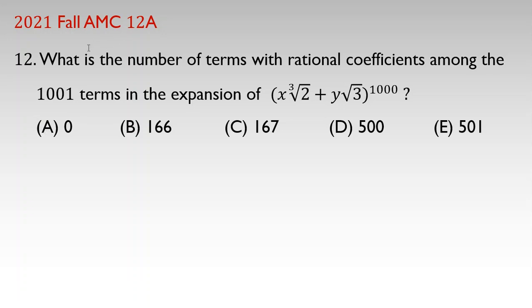In this video, we are going to solve problem number 12 of 2021 Fall AMC 12A. The problem is the following: What's the number of terms with rational coefficients among the 1001 terms in the expansion of x times cube root of 2 plus y times square root of 3, all to the power of 1000?